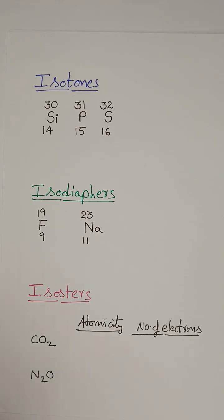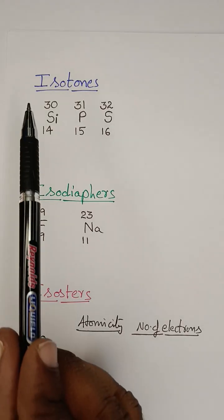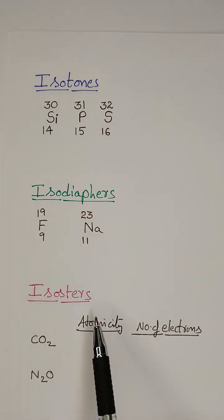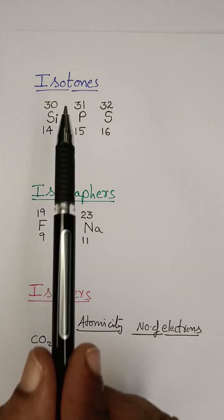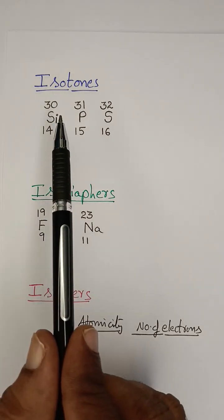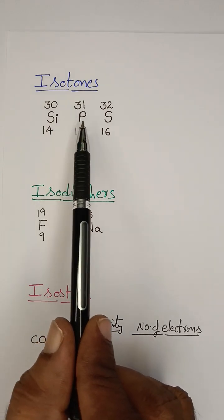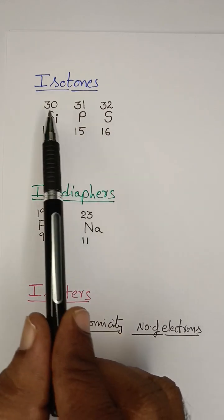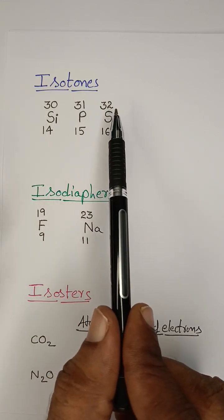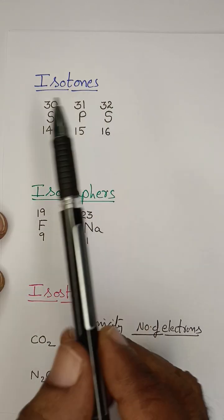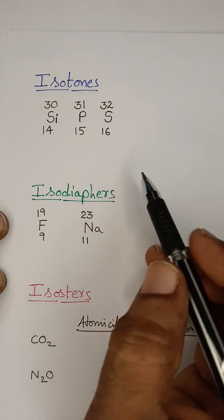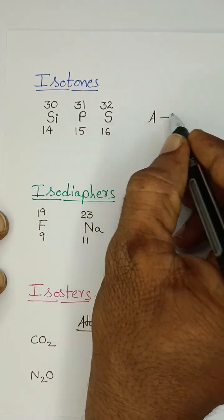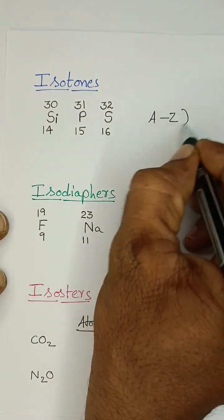Students, I am going to study isotones, isodiaphores, and isosters. Isotones means a nuclide of different elements having different atomic numbers, different mass numbers, but same number of neutrons. A minus Z gives the number of neutrons.